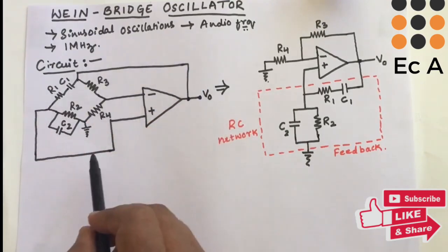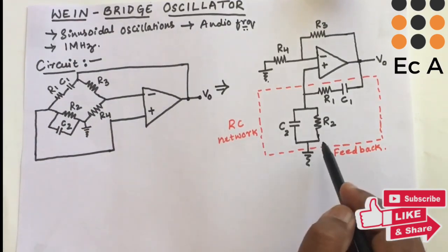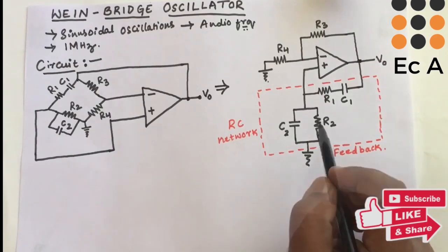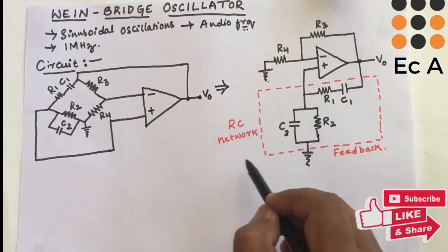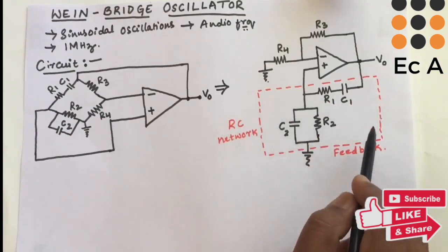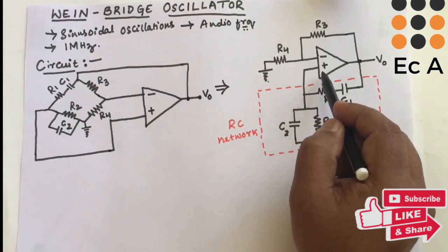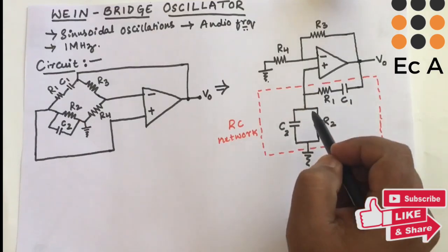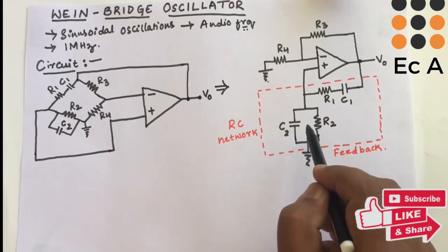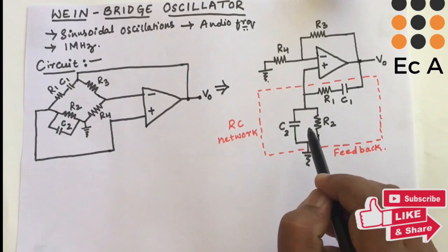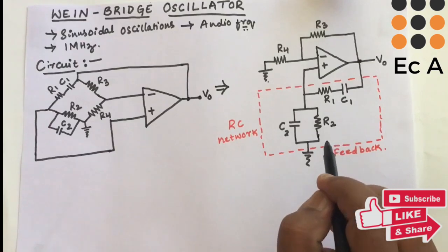To understand the operation of the Wien Bridge Oscillator, we rearrange the bridge part of the circuit. In the rearranged circuit, the series combination of R1 and C1, and the parallel combination of R2 and C2, form the RC network which acts as the feedback path connected to the non-inverting terminal of the op-amp. The thermal noise in the circuit acts as the input to the oscillator. Thermal noise consists of multiple frequency components, and the feedback network should select only one frequency component to get sustained oscillation.